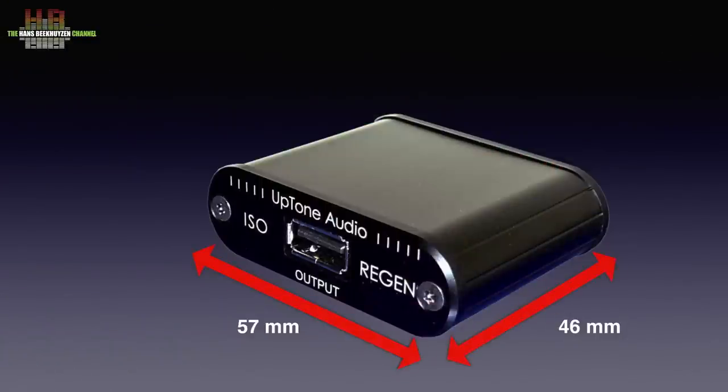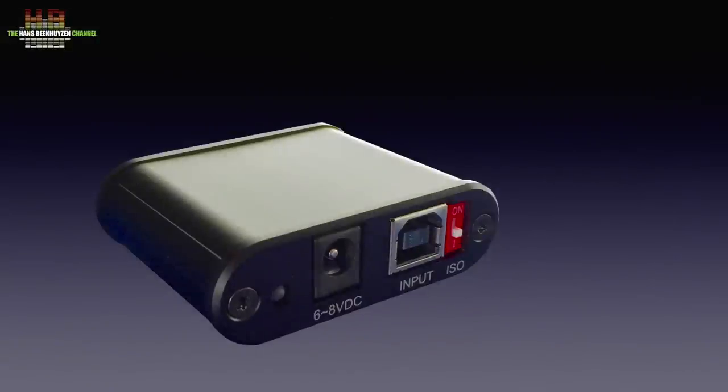The ISO Regen really is small compared to the devices I reviewed earlier. Approximately 57 x 46 x 17 mm. On what can be described as the front, there is a USB-A socket that will be connected to the DAC. On the rear we find a 6 to 8 volt DC power input, the USB-B socket that needs to be connected to the sending device, like for instance a computer.